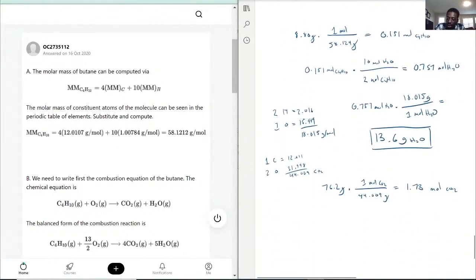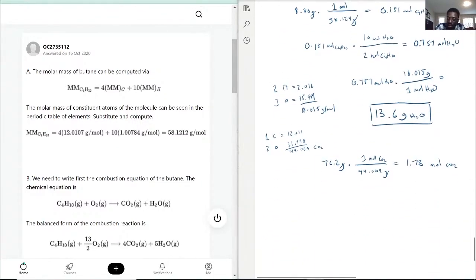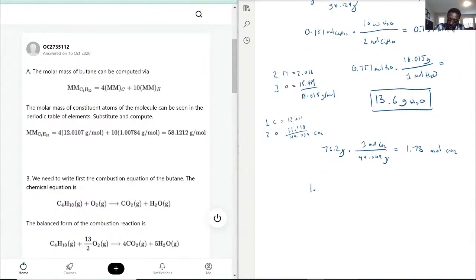And then based on the conversion factor here, there is two butanes produced for every eight CO2. So if we put that in the equation, we have CO2 we need and then we want to go to butane, so that's two moles of C4H10 and eight moles of CO2. So really all you're doing is just dividing by four. You have 0.433 moles of C4H10.